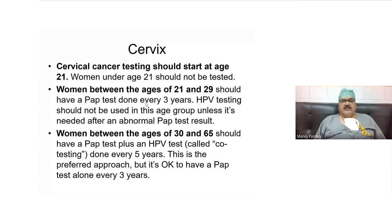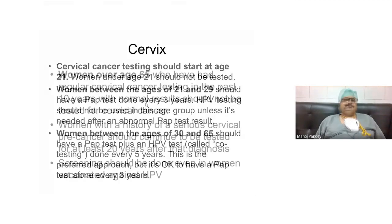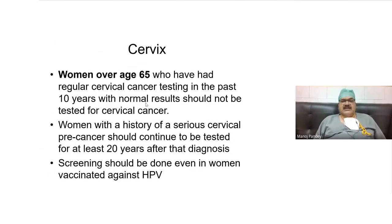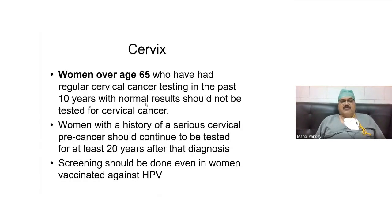Ideally, every woman above 21 years of age should have a pap smear, and above 30 years a pap smear plus HPV co-testing. Above 65, if a woman is healthy and has had normal results in the last 10 years, you can stop testing. However, women with a history of previous pre-cancerous lesions like LCIL or HCIL, or those who have tested HPV positive, should continue screening even after age 65.